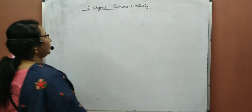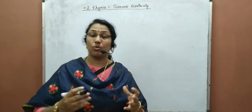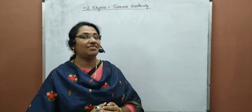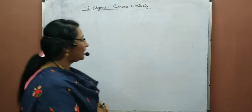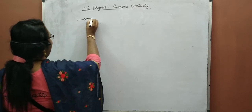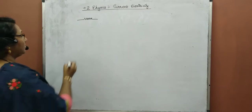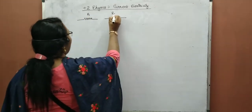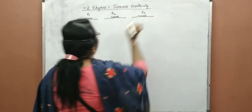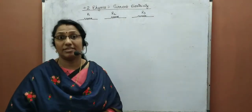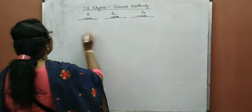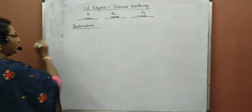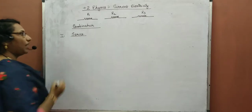Today we are going to take more than one resistor and combine them. Just like our capacitors — combination of capacitors — we are going to study the combination of resistors. It is very easy because you have already studied it in your 10th class. A resistor is always represented like this. We have resistors R1, R2, and R3. The first combination is series and the second one is parallel.